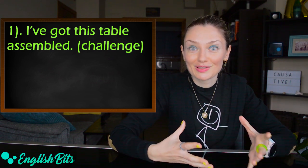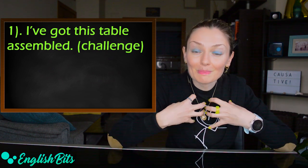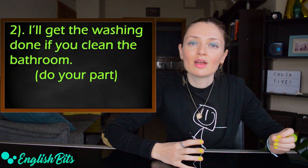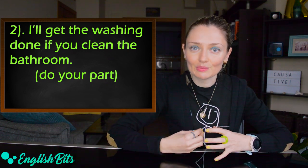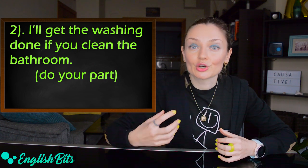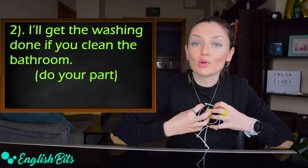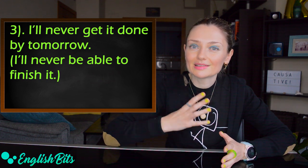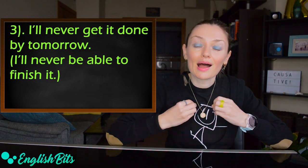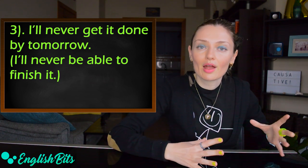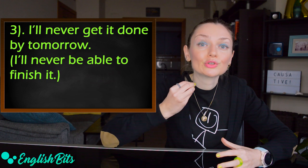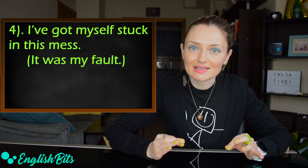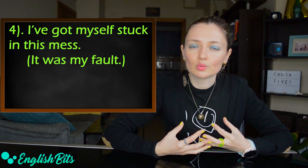So in this case, we can use this structure even though it was me who performed this action, not another person. The second example: I'll get the washing done if you clean the bathroom. In this case, it also means that I'm going to do the washing. And in this case, we mean that I'm going to do my part if you do your part. The third example: I'll never get it done by tomorrow. The same: I'm doing this action. And by using this structure, I want to say that I won't be able to finish it by tomorrow. And one more example: I've got myself stuck in this mess. In this case, I use this structure to mean that it was my fault.